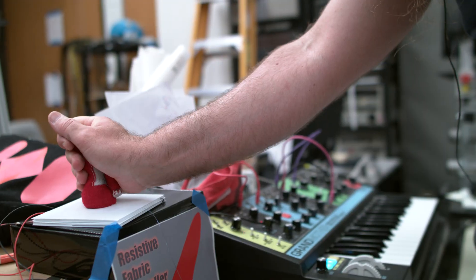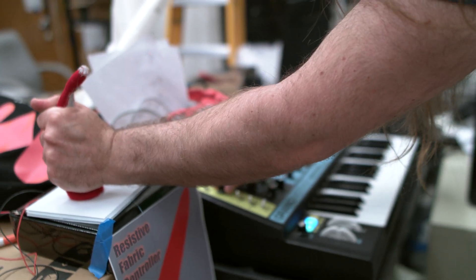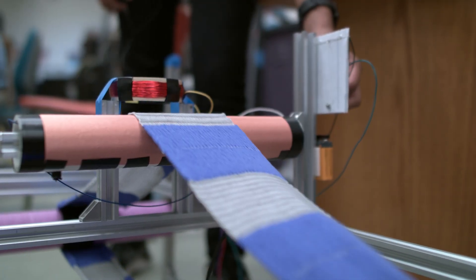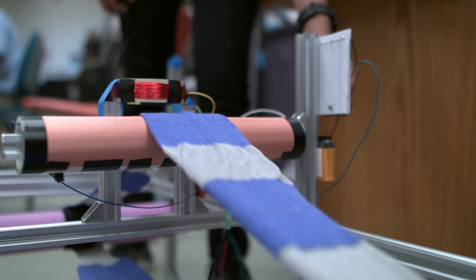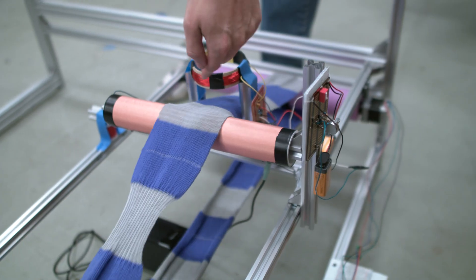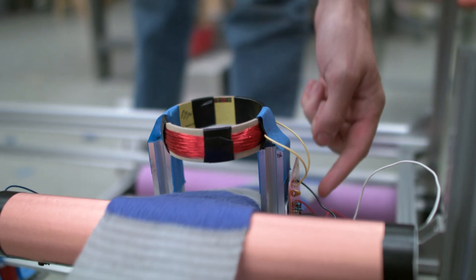The resistive fabric controller is using it in a very simple way. It's just measuring the resistance and the change in that resistance as the yarn is stretched. The tape loop is using it in a very complicated way. That resistance is allowing a signal to be created, broadcast electromagnetically, and then picked up by an inductive pickup.